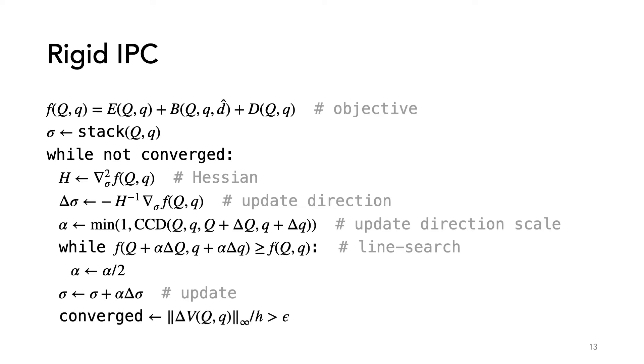The major differences come in the objective function and the CCD, which is now over rotations and positions instead of linear changes in the vertices. These are, in turn, the major contributions of our work required to extend IPC to rigid bodies.